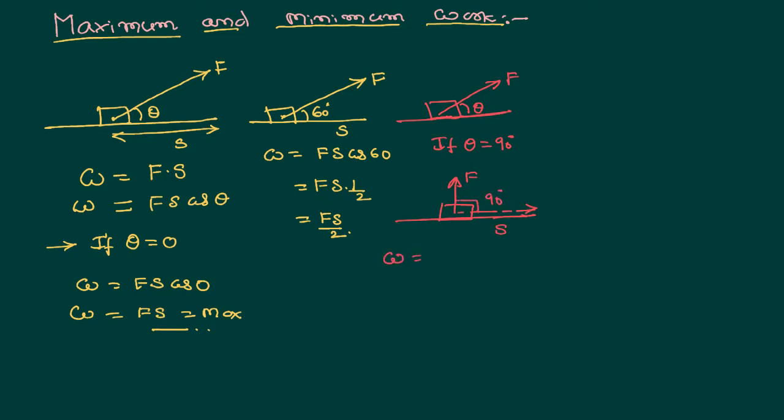Then what is the work done? Fs cos 90. We know cos 90 equals 0, so the work done equals 0. Why do we say the work done equals 0? The applied force is not able to produce any displacement in the direction of the force.